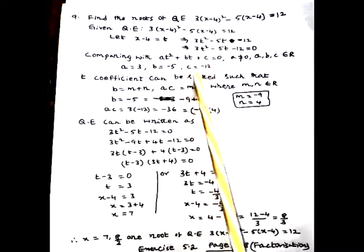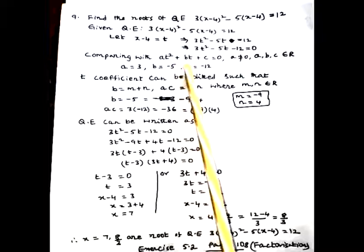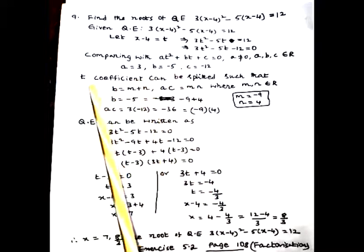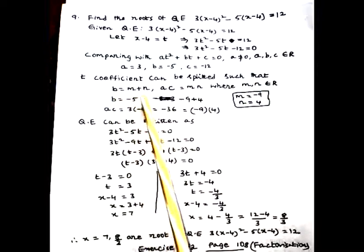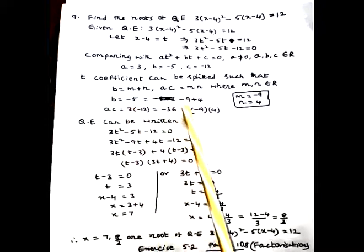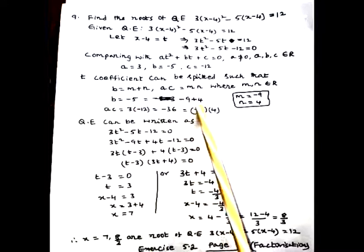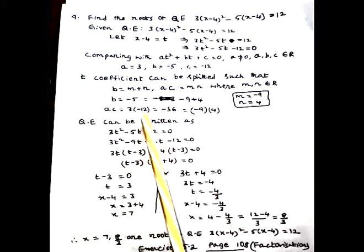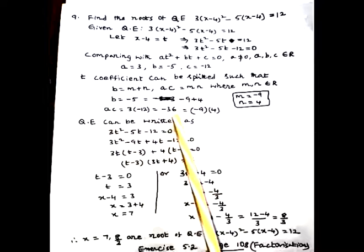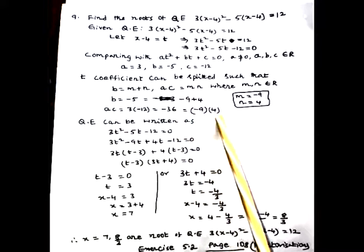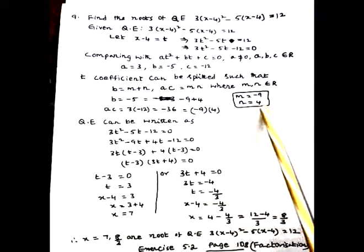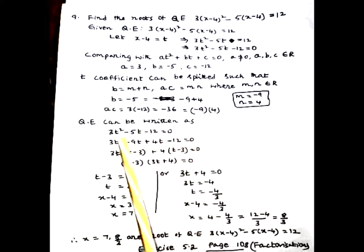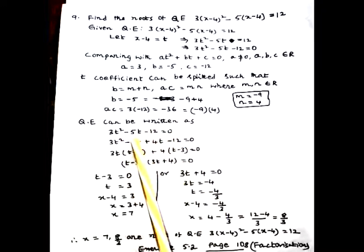The middle term b·t should be split such that b = m + n and product ac = mn. b = -5 is written as (-9) + 4. The product ac = 3 × (-12) = -36, which equals (-9) × 4. So m = -9 and n = 4. The equation 3t² - 5t - 12 = 0 has its middle term -5t split as -9t + 4t.